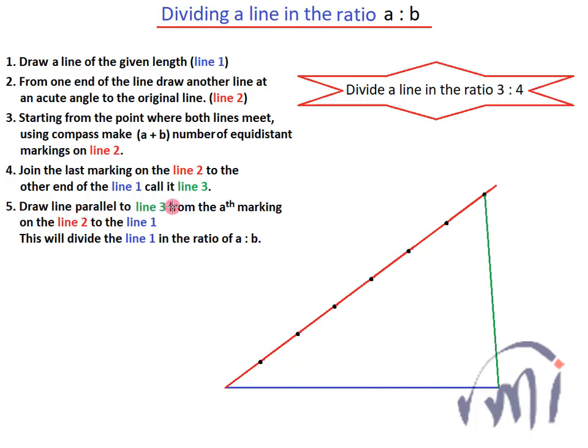Next is draw a line parallel to line 3 from the ath marking on the line 2. So the third marking from this point, that is 1, 2 and 3.